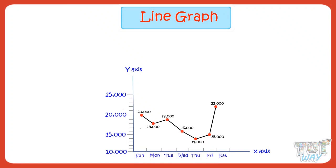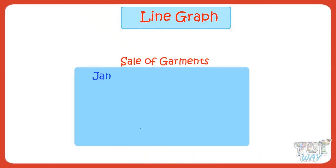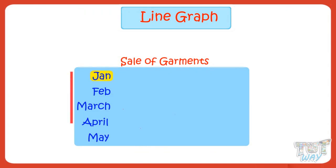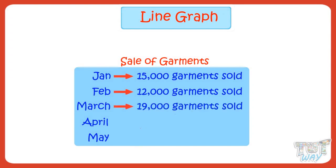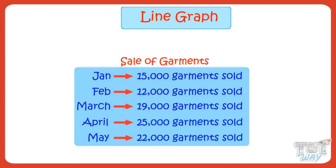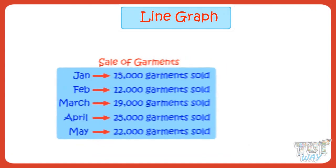Let's learn it more with the help of examples. Sale of garments was noted down for a particular company for a period of 5 months, that is January to May. 15,000 garments were sold in January, 12,000 in February, 19,000 in March, and so on. We have to draw this information in the form of a line graph.